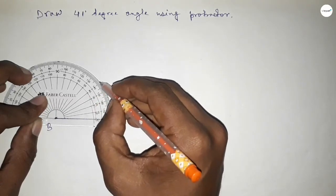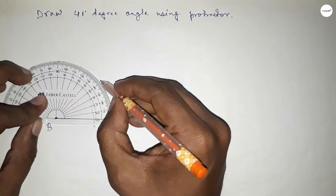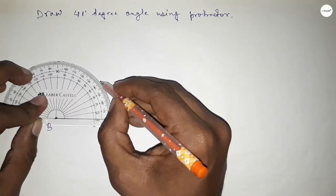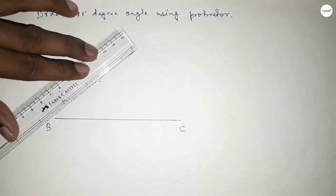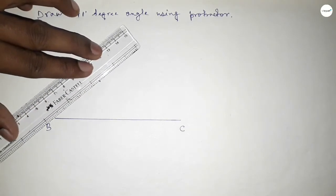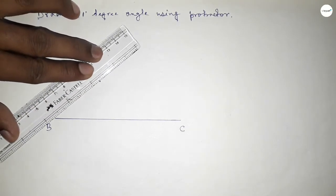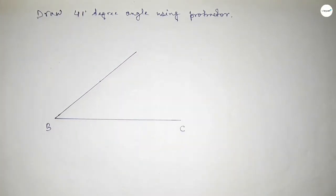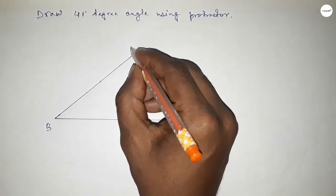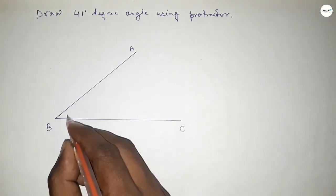And this is 40, and this is 41 degrees. So this one is 41 degrees. Now joining this side to get a 41-degree angle. By joining this, we got a 41-degree angle and taking here a point.